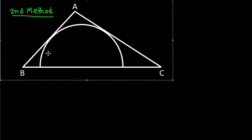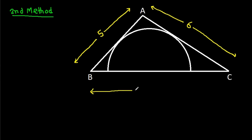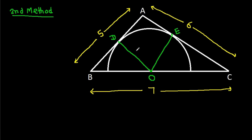We have AB is 5, AC is 6, and BC is 7. The center of the semicircle is O, the tangent points are D and E. OD and OE are both the radius R, and the angles at D and E are 90 degrees.